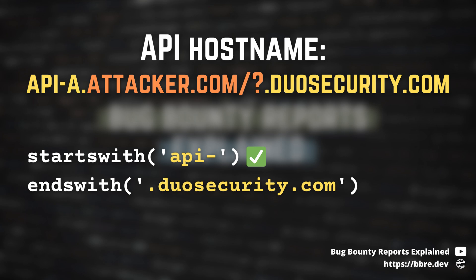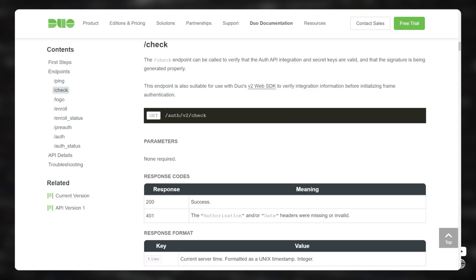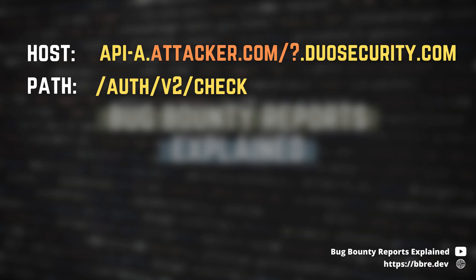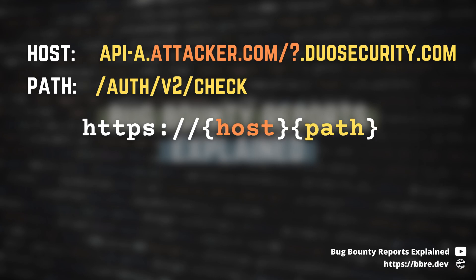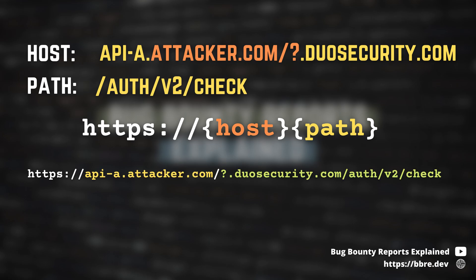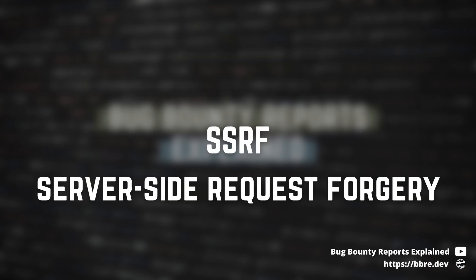So it's quite easy. You can use this address to bypass it while still controlling the host name. And after the validation, Redacted.com makes a request to the auth/v2/check endpoint. It just concatenates your host to this path, and this is the final location where your request is sent. This way, you can trick the server into sending requests to an arbitrary location. It's a typical server-side request forgery, and as you could not read the response, it's a blind one.